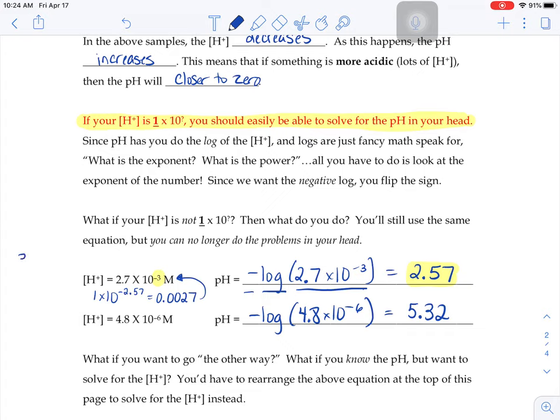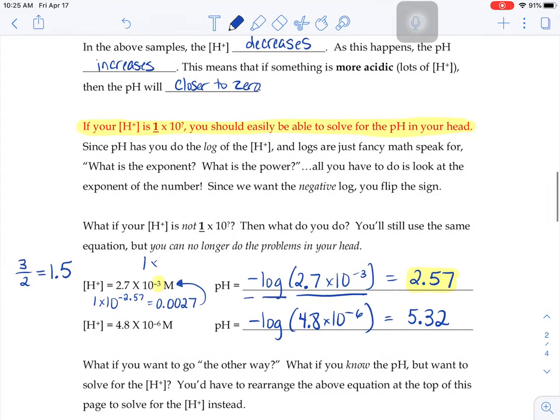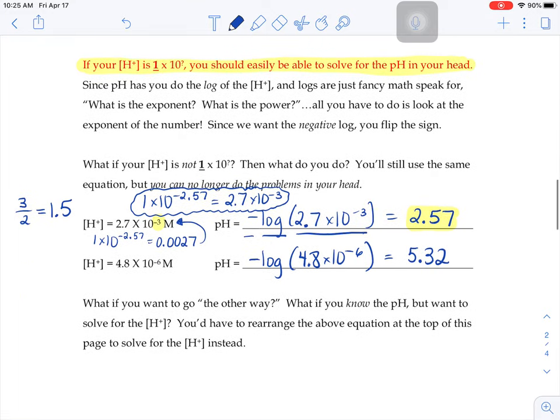So it's kind of like how 3 halves and 1.5 are the exact same number, but they look nothing alike. One's a fraction. One's a decimal. One has threes and twos. One has ones and fives. They look nothing alike, but they mean the same thing. So 1 times 10 to the negative 2.57 is the exact same thing as 2.7 times 10 to the negative third. Your calculator is turning it into a number that you can have the 1 times 10 to the something instead of the 2.7 times 10 to the something.